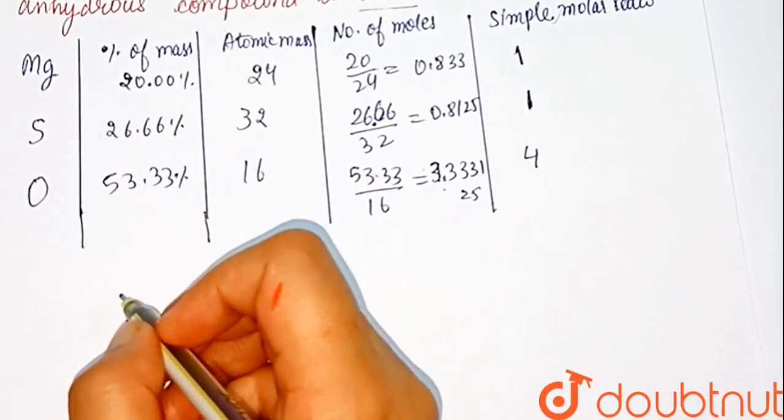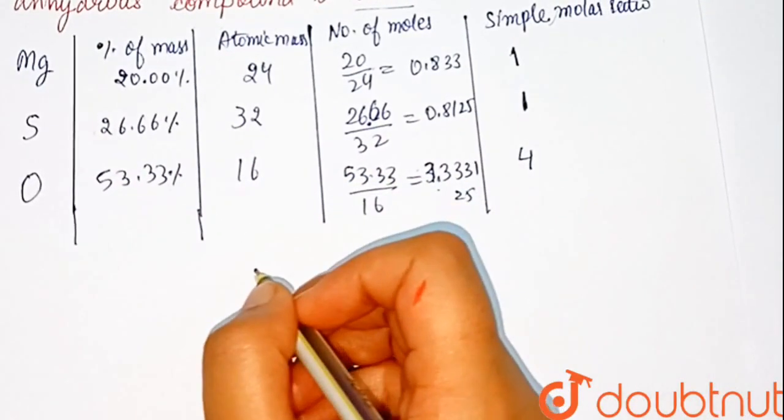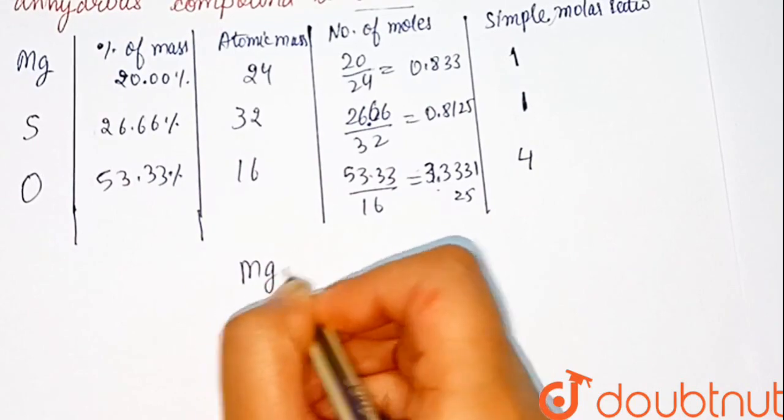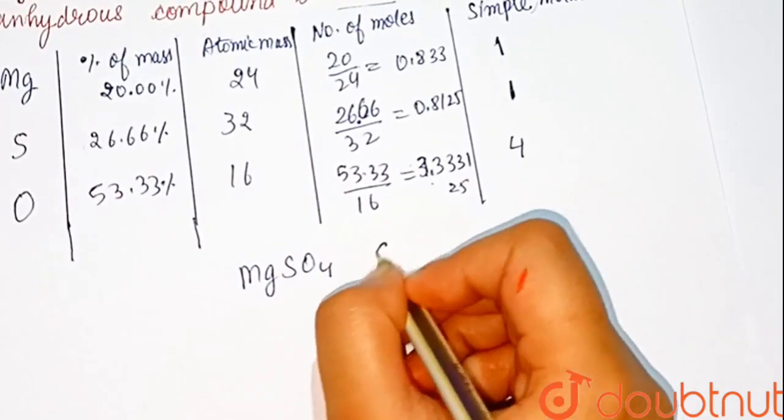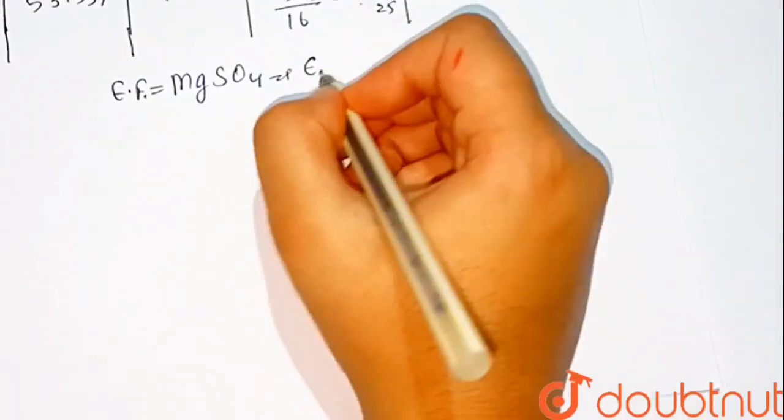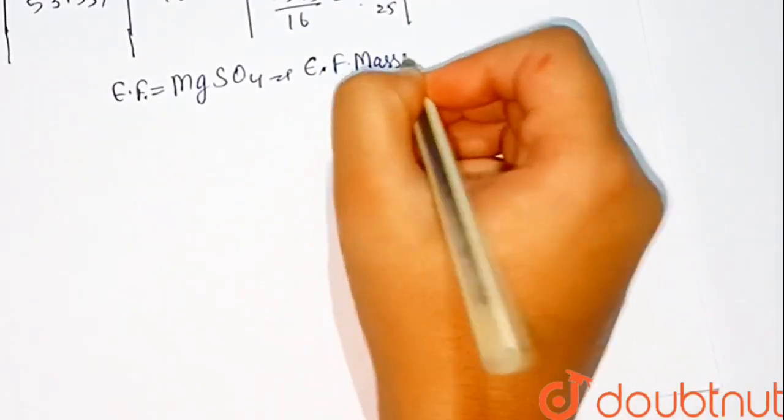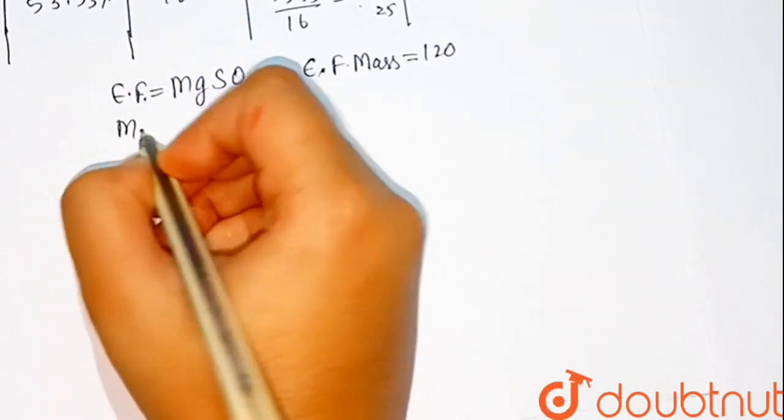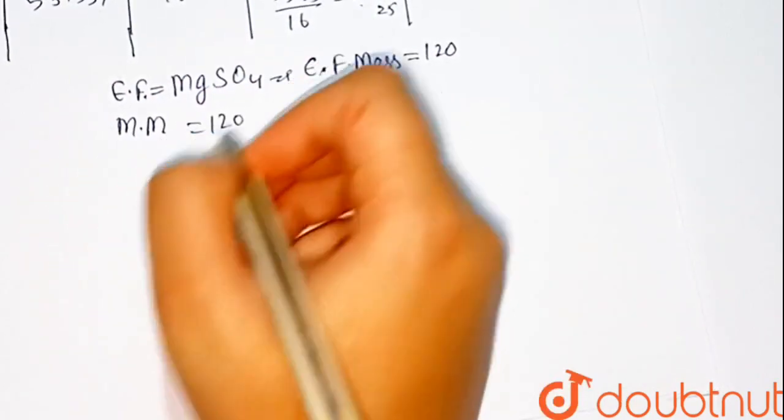So, empirical formula of the anhydrous salt comes out to be MgSO4. Empirical formula mass equals 120 and molecular mass equals 120. Hence, molecular formula is MgSO4.